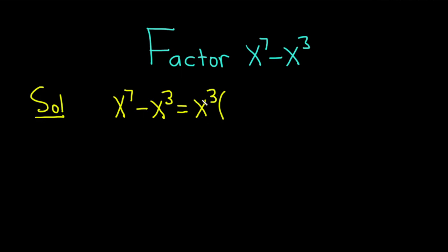what do you multiply by x cubed in order to get x to the 7th? Well, that would be x to the 4th. And the reason is, when you multiply these, because the bases are the same, you add the exponents. 3 plus 4 is 7.